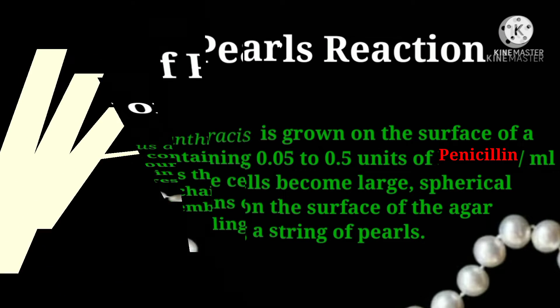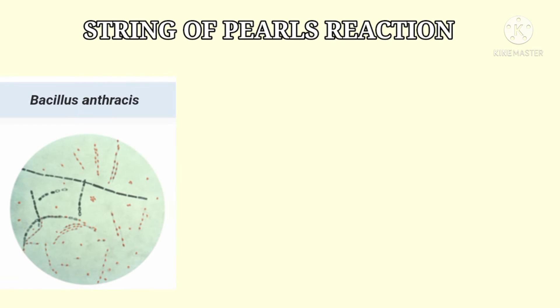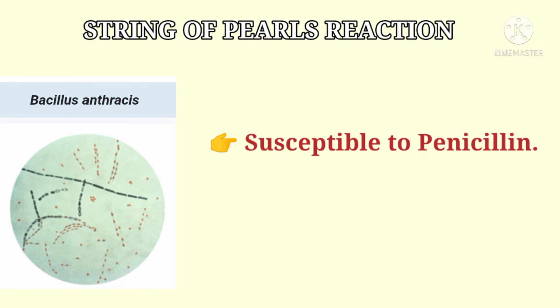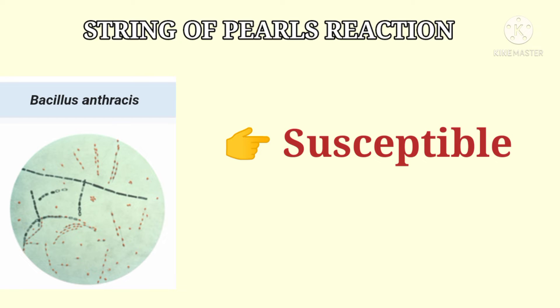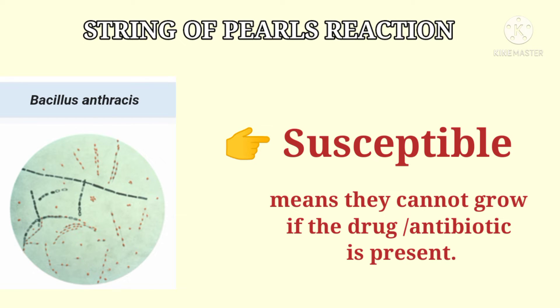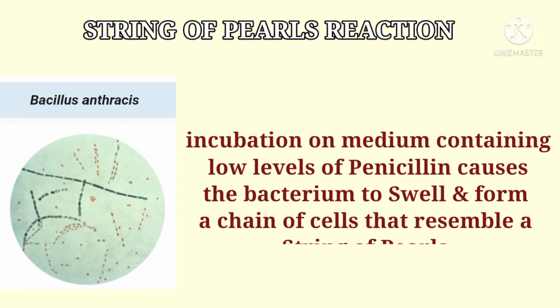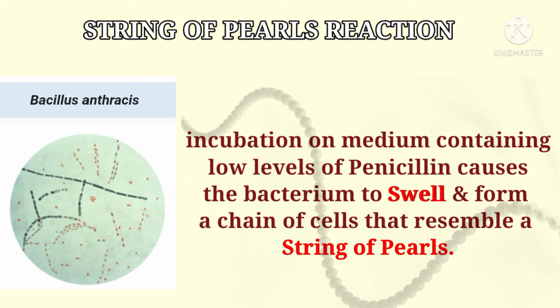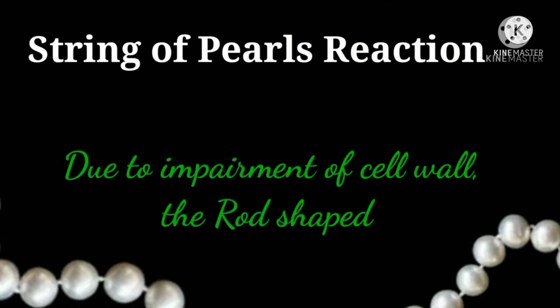What makes this reaction happen? Bacillus anthracis is susceptible to penicillin — susceptible means they cannot grow if the drug or antibiotic is present. Incubation on medium containing low levels of penicillin causes the bacterium to swell and form a chain of cells that resemble a string of pearls.